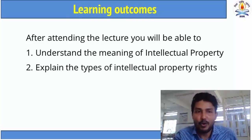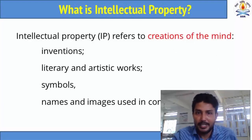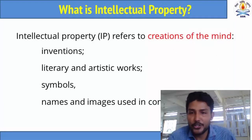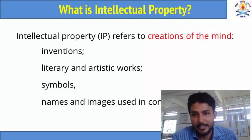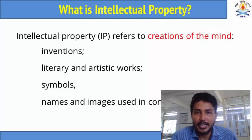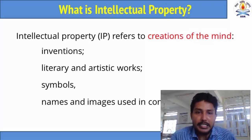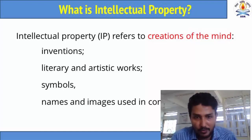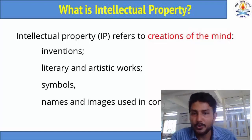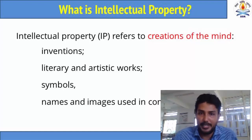So let us see what is intellectual property. Intellectual property refers to creation of the mind — the word 'intellect' is related to brain or mind. So anything which is created by the brain is intellectual property, like inventions, literary and artistic works, symbols, names, images used — they all come under intellectual property.